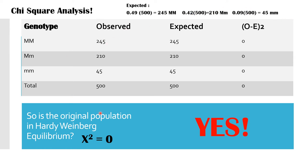This is the observed distribution we already saw in the population of 500. You can see that they are the same, which means we get a chi-square value of 0, which means yes, our original population is in Hardy-Weinberg equilibrium.